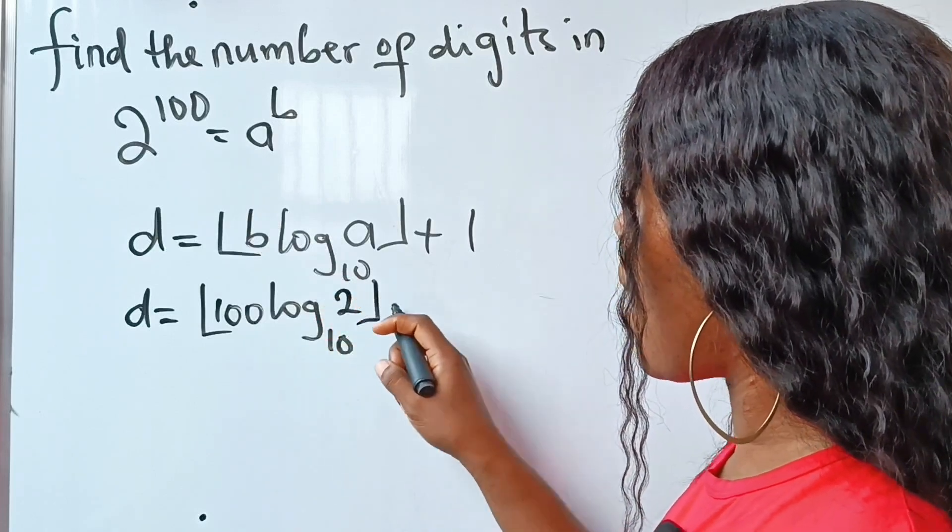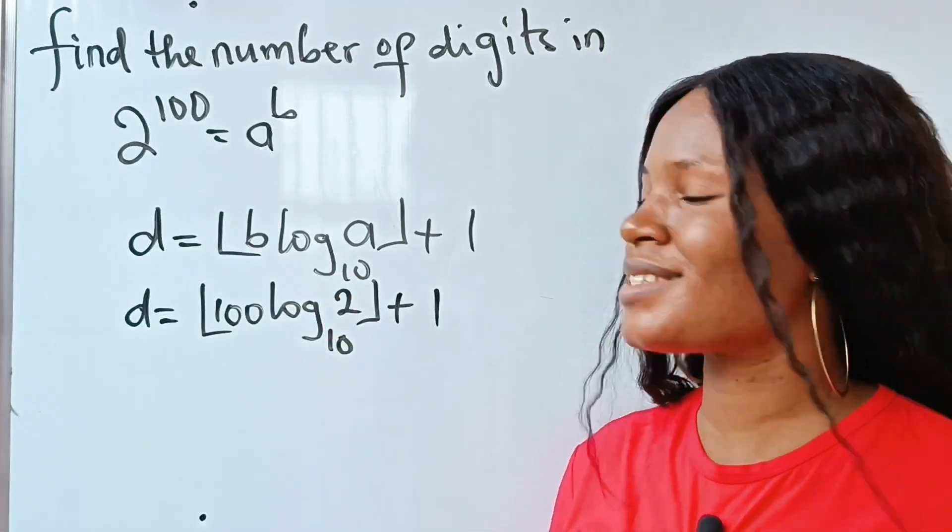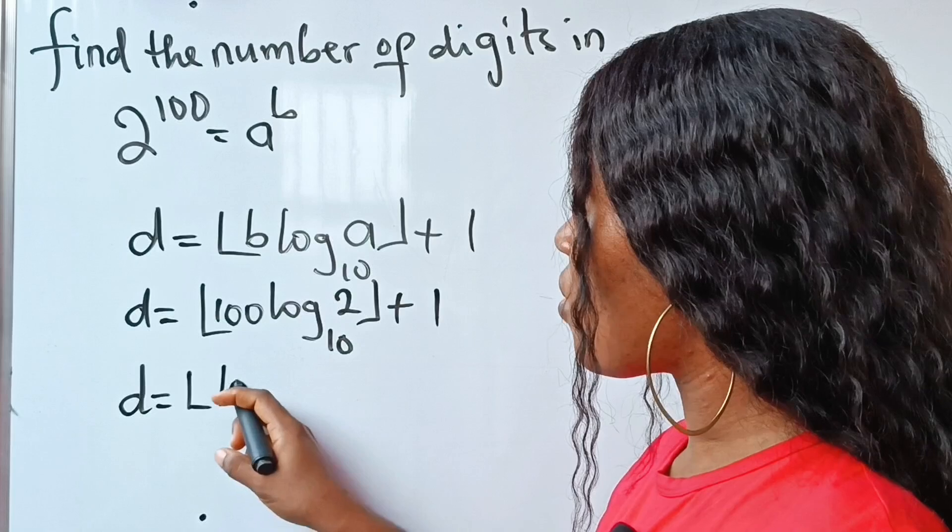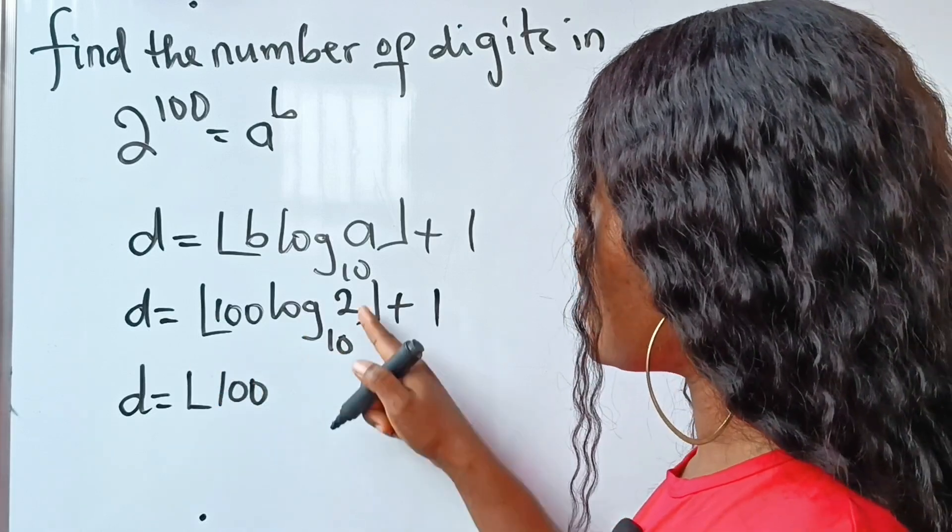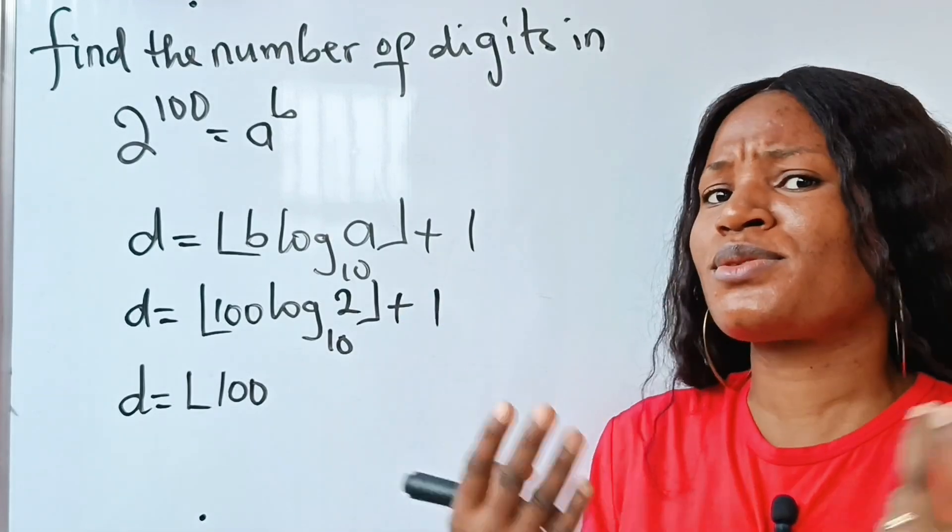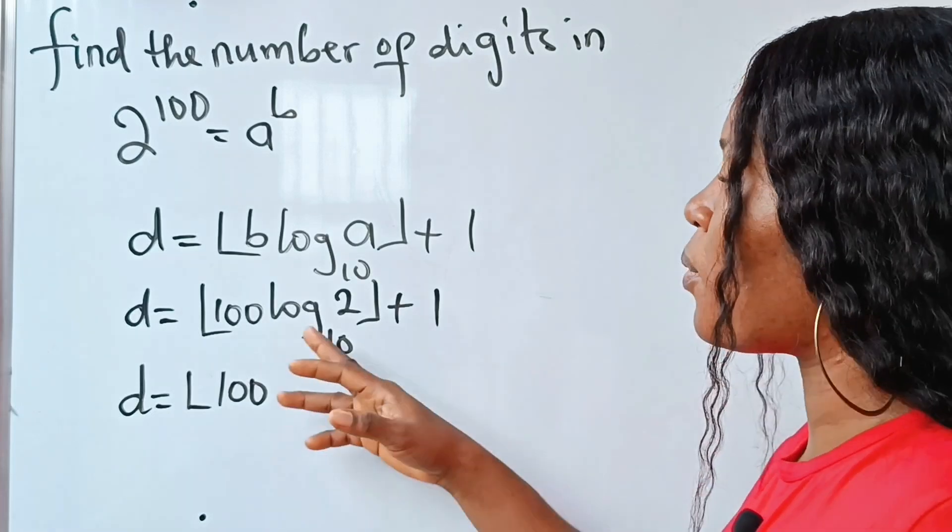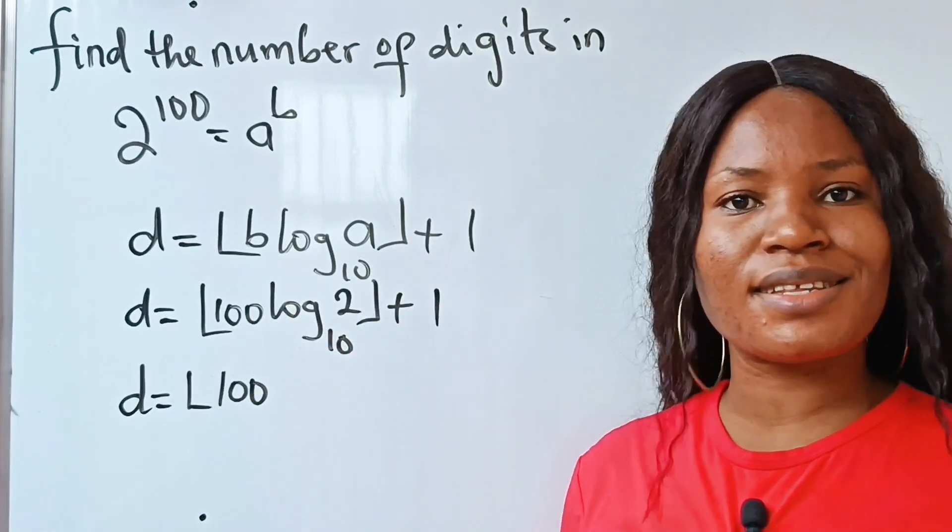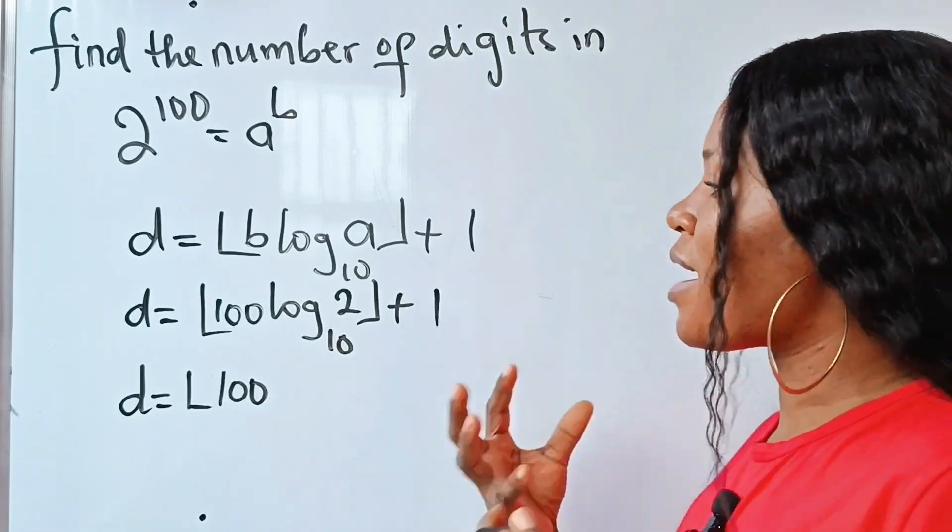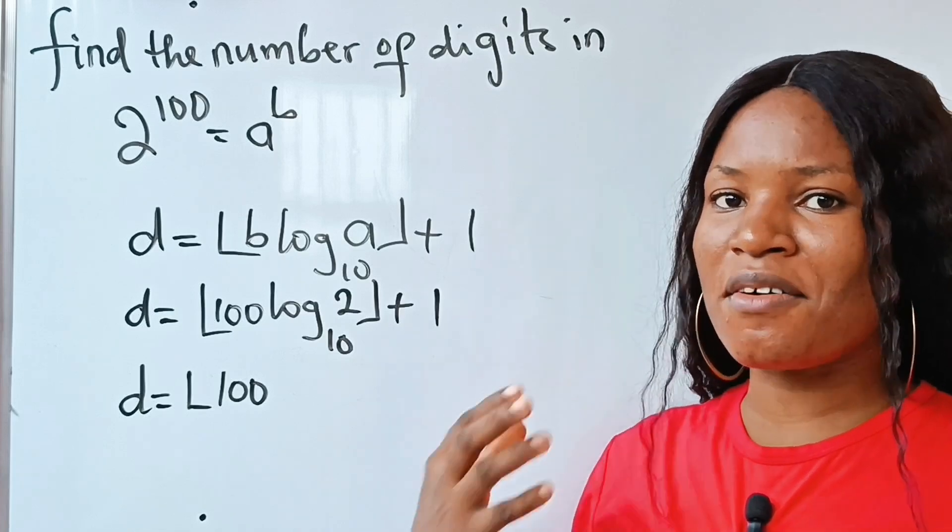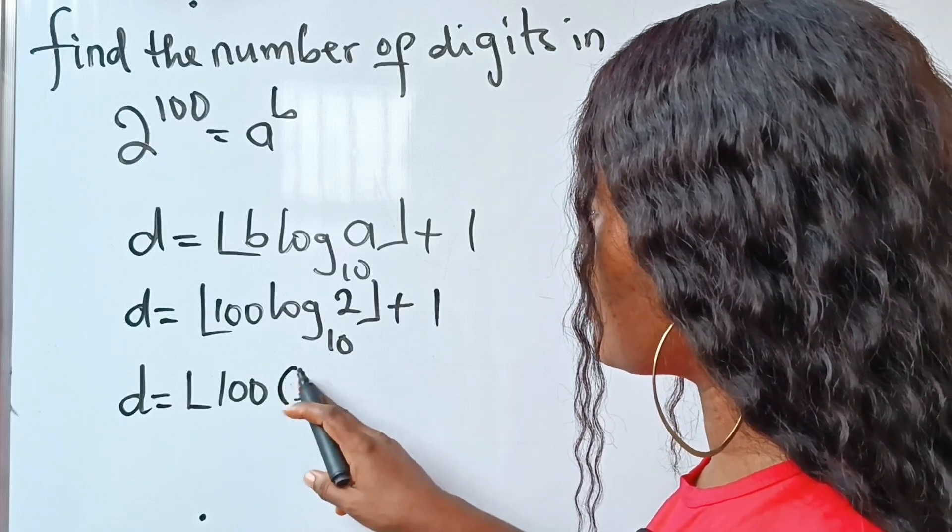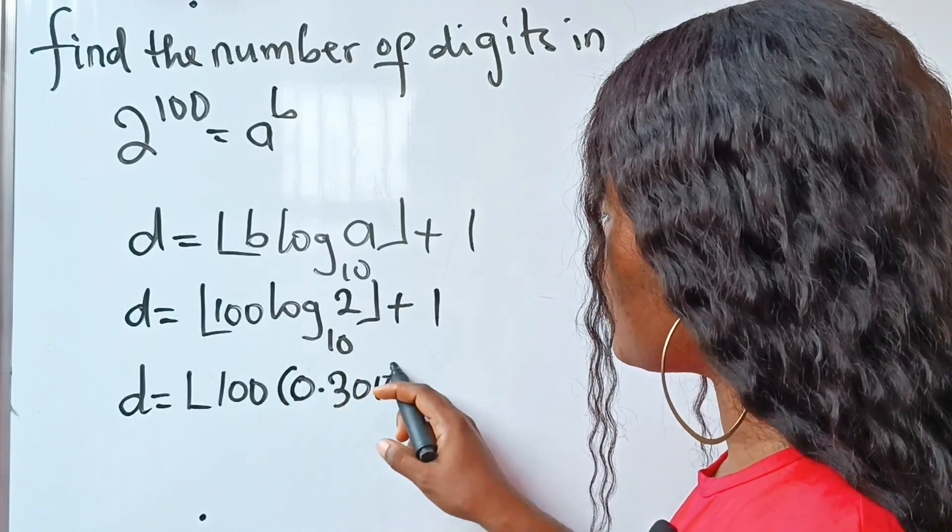So our d is equal to the floor of 100 log to base 10 of 2. Now there are some logarithms that we're supposed to know without using a calculator. For example, log to base 10 of 2 is 0.3010. So there are some that we should try to have at the back of our mind all the time. Log to base 10 of 2 is 0.3010, all right, plus 1.